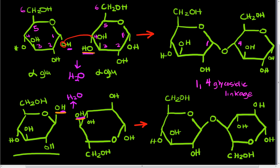And we can figure out what kind of linkage this is if we count our carbons. So here we've got our carbon number one, two, three, four, five, and six. So we can count our carbons over here in the same way — we've got one, two, three, four, five, and six. If you flip that upside down, you can see that all the carbons have the same numbers in both of these two molecules. So if we look to see who's forming the bond, we can see that it's carbon one and carbon four. So this is still a 1,4 glycosidic linkage — just now one of the glucose molecules is in an upside-down orientation compared to the other glucose molecule.